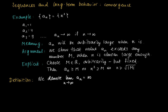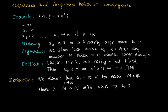We denote the limit as n goes to infinity of a_n equals infinity if: for each constant m in ℝ, there is a first index — a natural number capital N — such that for all indices n greater than or equal to capital N, it follows that a_n is at least m.